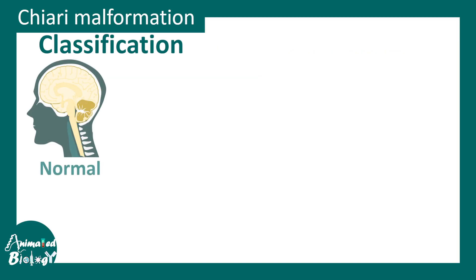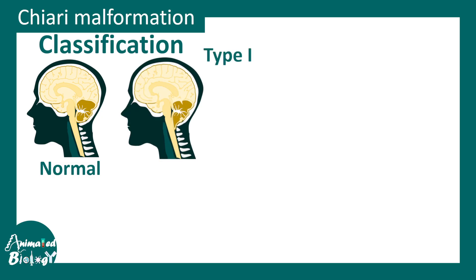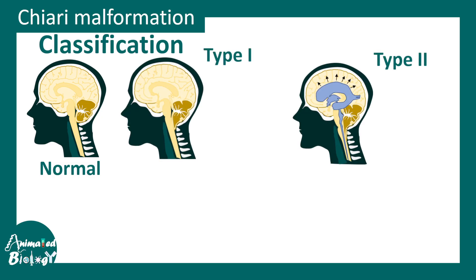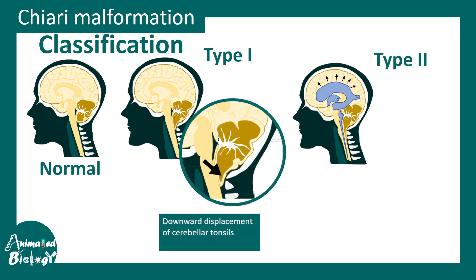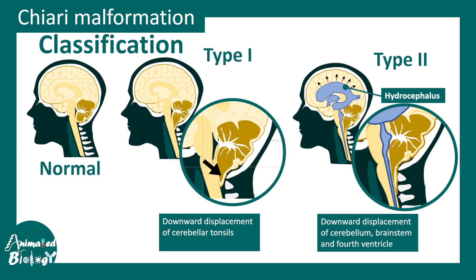Let's talk about the different classifications in a bit more detail. This is how the normal brain looks like. This is type 1 Chiari malformation and this is type 2. Type 1 leads to a downward descent of the cerebellar tonsil. Type 2 is often associated with hydrocephalus, and not only is there downward displacement of the cerebellum, but also the brain stem as well as the fourth ventricle. This leads to an obstruction in the CSF flow, which ultimately leads to hydrocephalus.